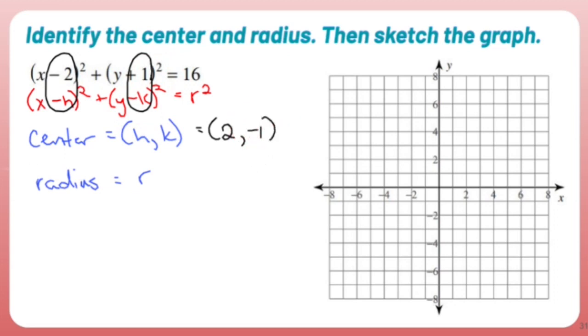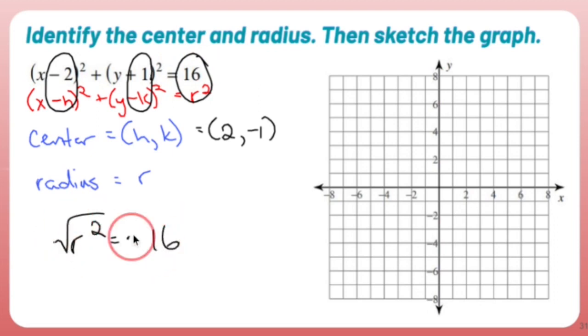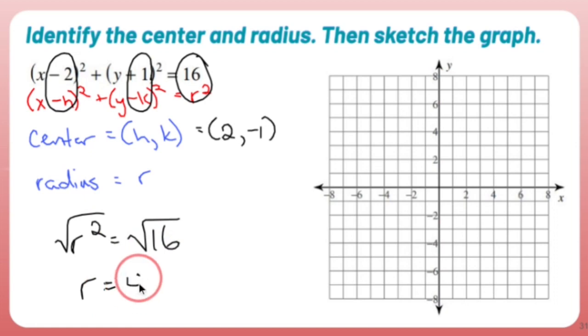Now it says here that r squared is 16. So if r squared is 16, I can just square root both sides and the radius is 4.